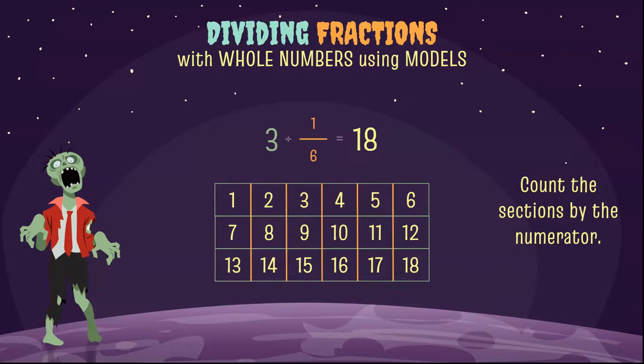So three divided into one-sixth gives me 18. So if we had three long sandwiches and we cut each sandwich into six and then gave out each section of the sandwich to our party guests, we could feed 18 people.